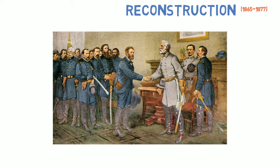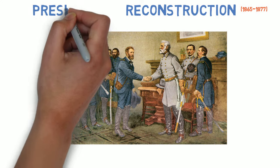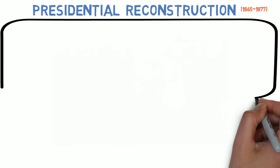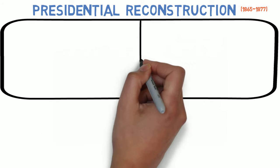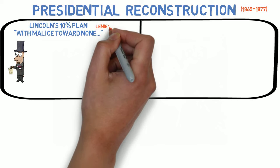The best way to understand Reconstruction is to divide it into two phases. The first phase, Presidential Reconstruction, is what this lecture will focus on. In order to get the former Confederates readmitted quickly, Lincoln proposed a moderate plan for Reconstruction known as the 10% Plan.